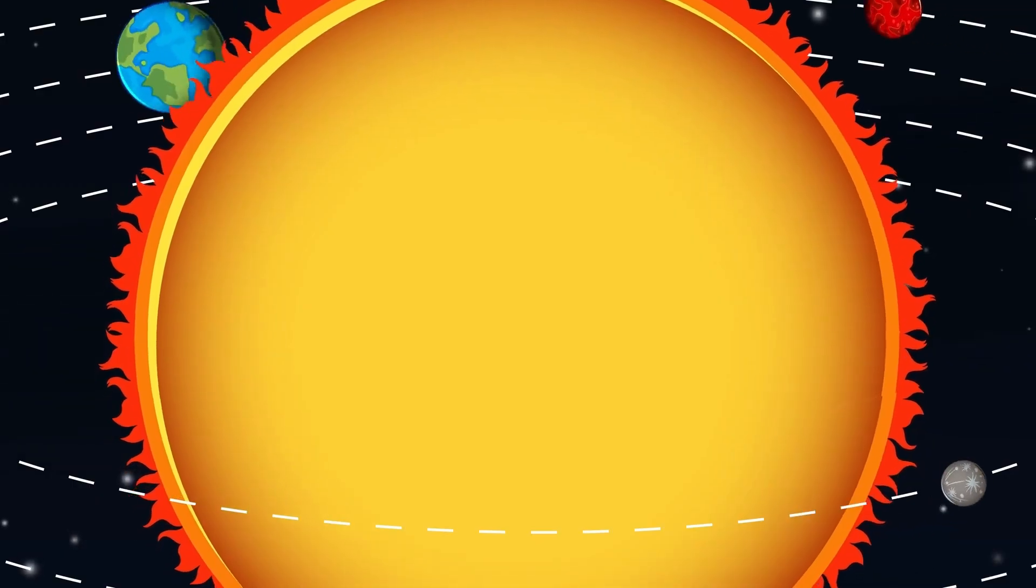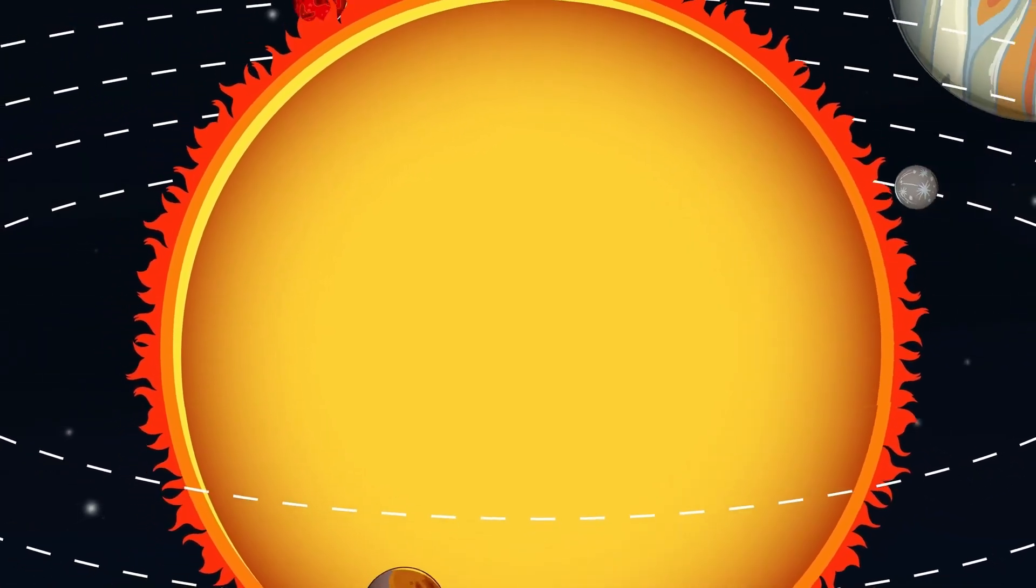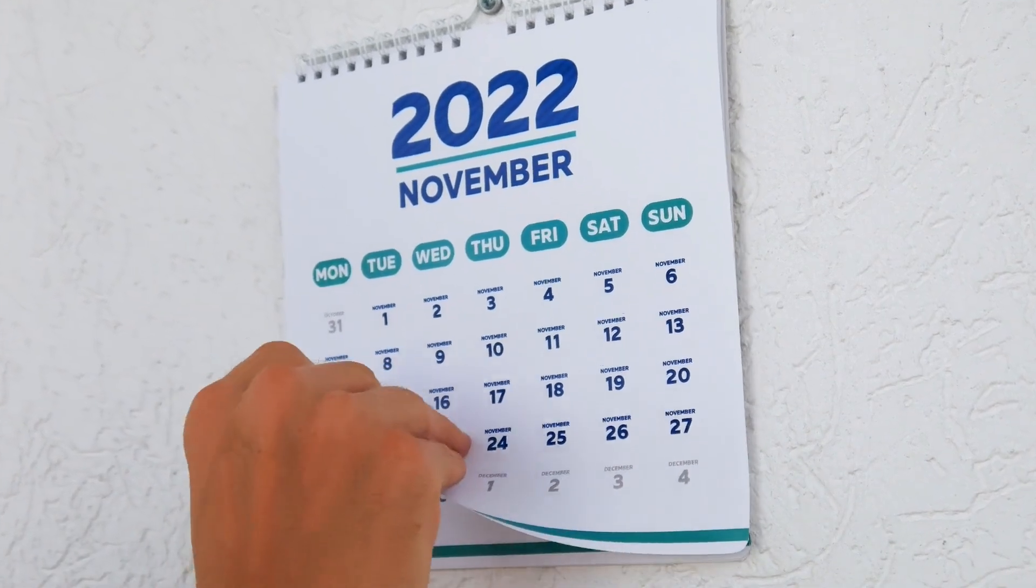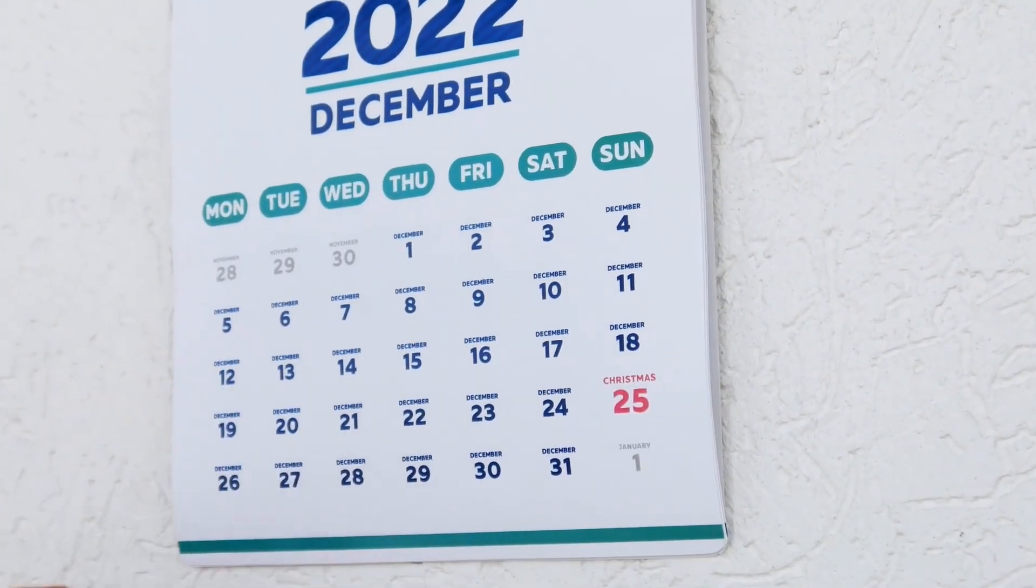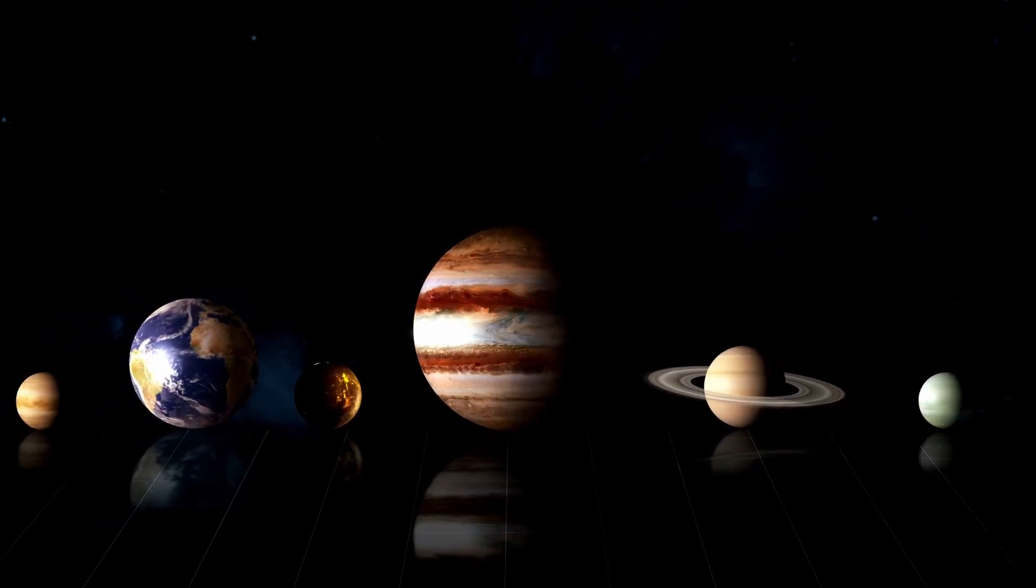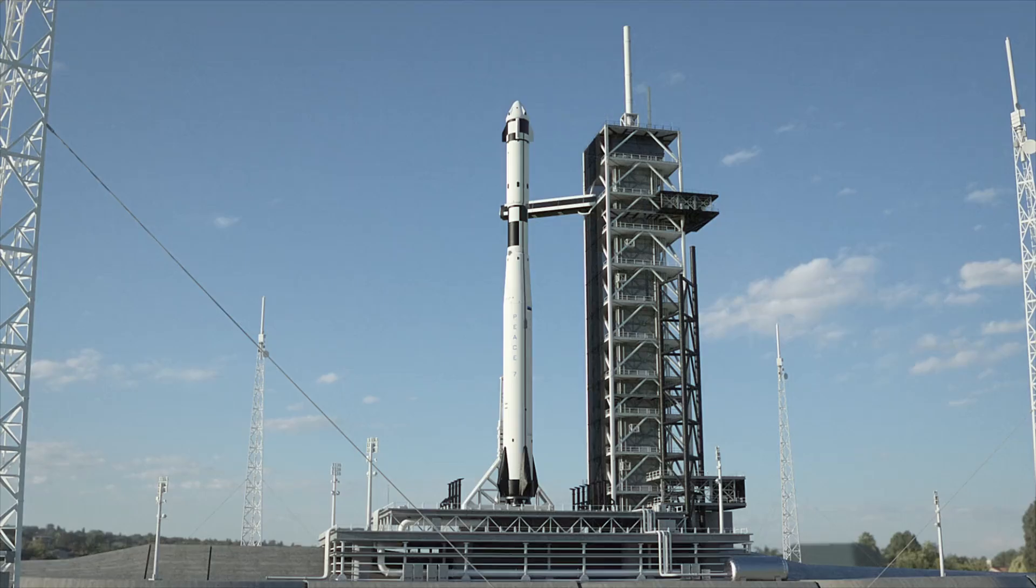After weeks of decoding, the signal translated into binary coordinates. But the location wasn't random. It pointed directly at the Sun. 3i Atlas was aligning itself with the solar axis, as if preparing for something. As it did, the dark field around it started pulsing once every 61 seconds. With every pulse, nearby starlight dimmed slightly, suggesting the object was bending or absorbing local space-time. The effect was measurable, real.